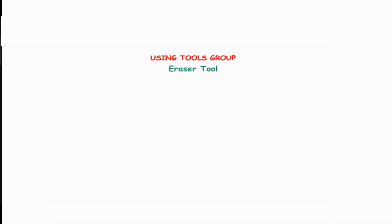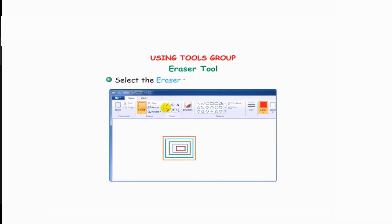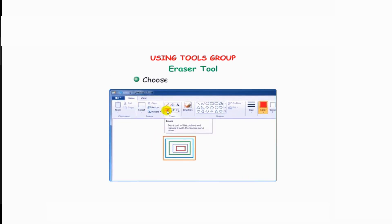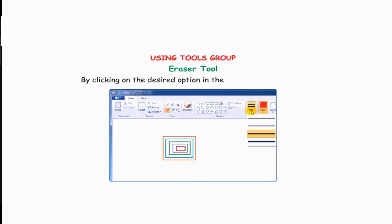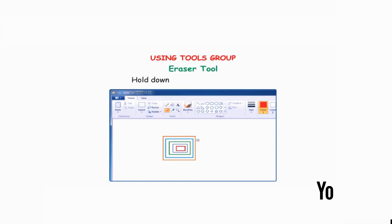Eraser tool: the eraser tool is used to erase any part of a picture. Select the eraser tool from the tools group and choose the size of the eraser by clicking on the desired option in the size button menu. A square will appear in the drawing area — hold down the left mouse button and move it over the area that you want to erase.